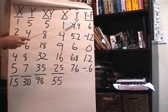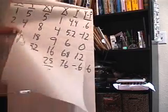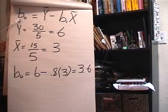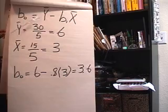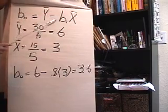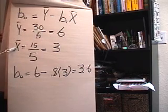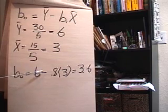Next I've got y hat, which is the predicted y, and then residual column, but we'll come back to that in a second. Once you've got your b sub 1, which we calculated to be 0.8, you can calculate your b sub 0, which is your intercept. So your intercept is the average y minus b sub 1 times your average x. So your average y is 30 over 5 or 6. Your average x is 15 over 5 or 3. So using this formula then, your intercept b sub 0 is equal to 6 minus 0.8 times 3, or 3.6.